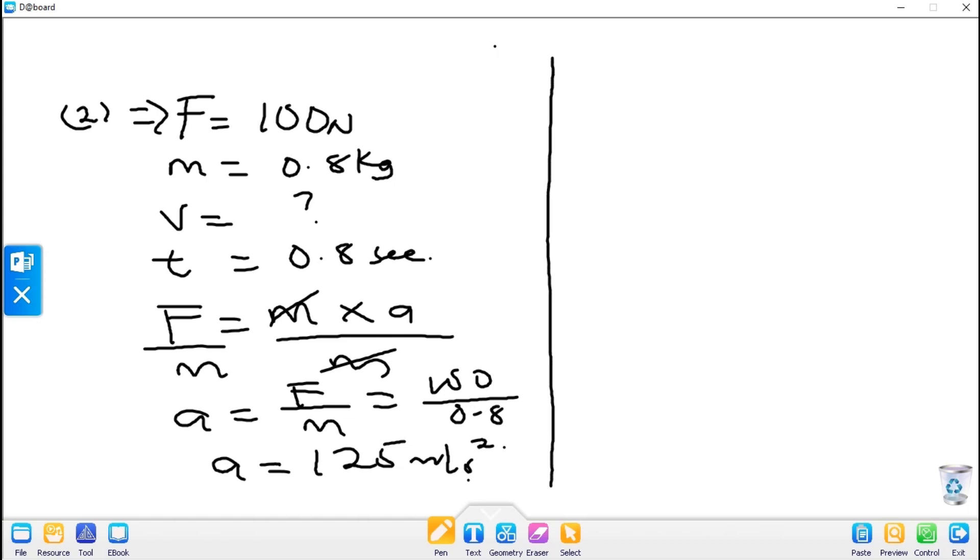From equations of motion, a equals v minus u all over t. Since the ball starts from rest, u equals 0. Therefore, a equals v over t. Our a was calculated to be 125 equals v over 0.8.